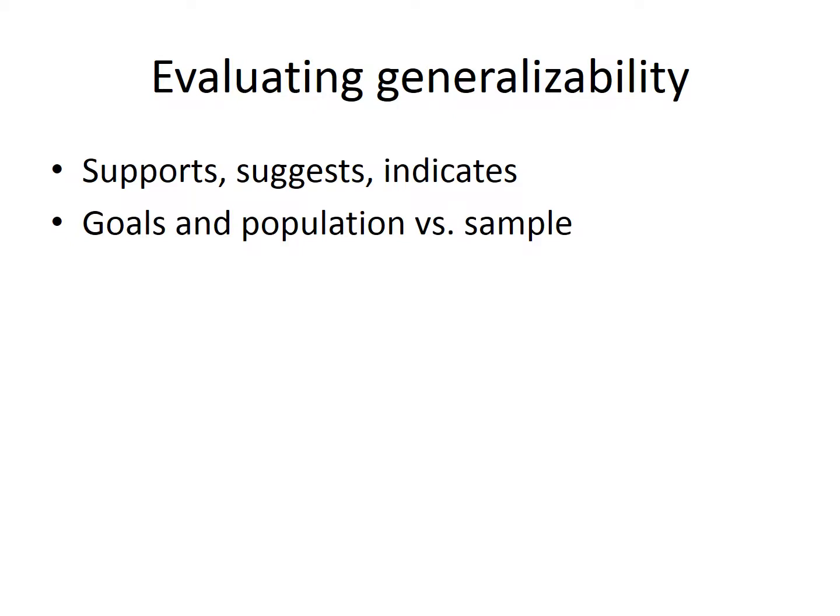The idea about generalizability is not that we would completely discount findings if we're not sure they represent the population. It just leads us to use disclaimers of sorts — words like 'support,' 'suggest,' 'indicates,' instead of 'proves' or 'directly causes.' The concept of generalizability also brings together several things we've learned about so far. It encourages us to think about the goals and the population of interest and how that's reflected in the sample.